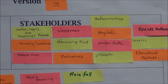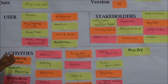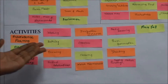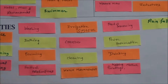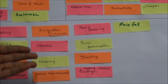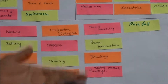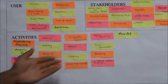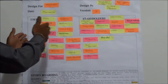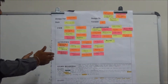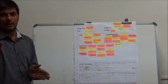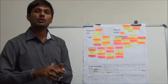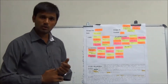For these users and stakeholders, we have some activities, like organic farming, bathing, farming, cleaning, water management, drinking, rainfall, etc. Rainfall is one of the activities for trees and plants. These are the activities, and from all the users, stakeholders, and activities, we can make four stories — two happy stories and two bad stories.